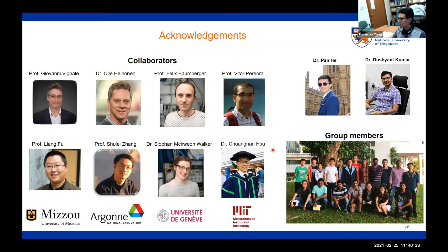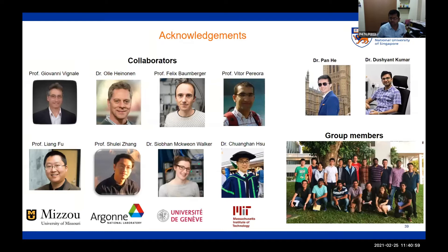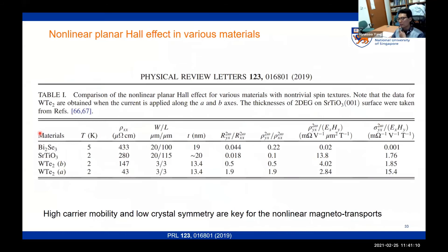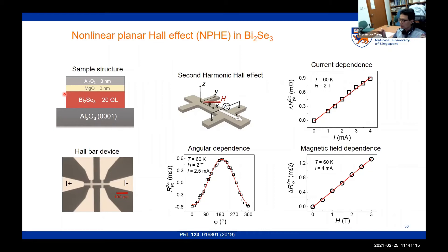Thank you so much for this wonderful lecture summarizing the recent developments. We have some time for questions. The first question from Mr. Kuspendra Gupta is: what is the role of the NGO layer in the nonlinear planar Hall effect? That's a good question. There is no role of the aluminum oxide — this is just to protect our surface from the environment. When you send electrons, we etch out this layer and make contact on top of bismuth selenide directly. This is just our capping layer with no special role.